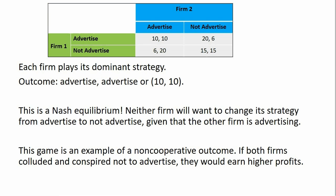Therefore, we predict both firms will play their dominant strategy, and the outcome will be advertise, advertise — or 10, 10. This, by the way, is a Nash equilibrium. Neither firm will want to change its strategy from advertise to not advertise, given that the other firm is advertising. For example, if we ask firm one: you're currently advertising and firm two's currently advertising — would you like to now not advertise? Firm one would say no, because its profits would fall from 10 to 6. Same from firm two's perspective — if firm two changed its strategy, it would move from 10 to 6. So this 10, 10 is indeed a Nash equilibrium.